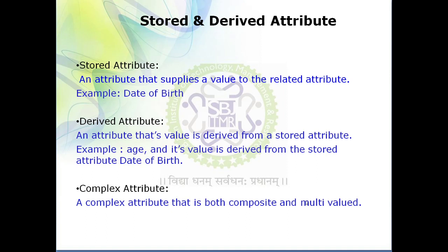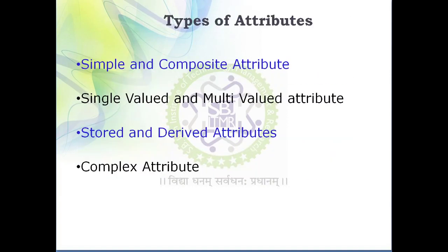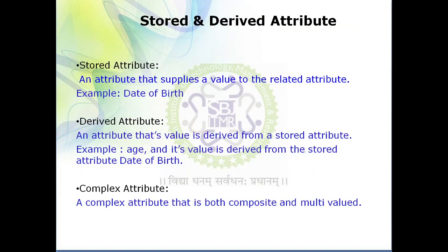So we have discussed the various categories of attributes: simple attribute — which cannot be further subdivided; composite attribute — which is further subdivided into many parts; single value attribute — having only a single value; multi-value attribute — having multiple values; stored attribute — from which another attribute derives its value; derived attribute — which derives its value from a stored attribute; and complex attribute — which is both composite and multi-value.